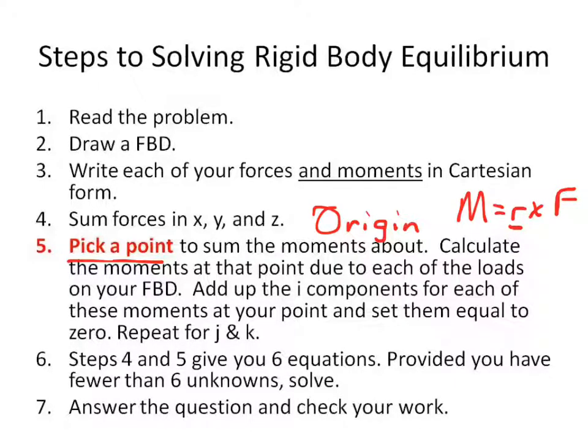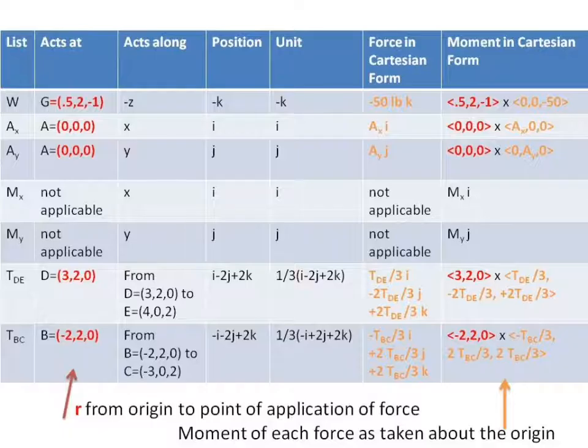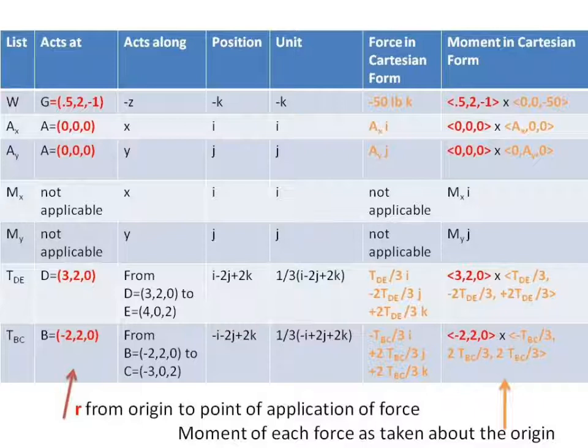where R is not the position vector we use to find F. R goes from the point I picked to the point of application of the force. So if I go from the origin to the point of application of the force, this is what I'm going to end up with, this column.